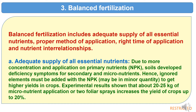Regarding adequate supply of all essential nutrients: due to excessive concentration on primary nutrients NPK, soils have developed deficiency symptoms for secondary and micronutrients. Hence, ignored elements must be added along with NPK, even in minor quantities, to get higher yields. Experimental results show that about 20-25 kg of micronutrient application or two foliar sprays can increase crop yield by up to 20%.